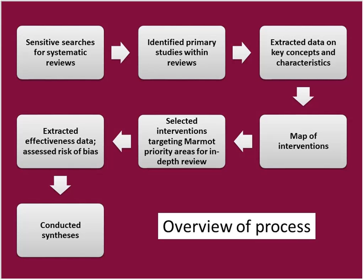The process we undertook was a standard systematic review. We undertook sensitive searches, looking for systematic reviews but also trials specifically around community engagement. We identified primary studies within reviews or trials of community engagement, extracted data from these studies on key concepts and characteristics, and used that to create a broad map of interventions to understand where community engagement had been used — with what populations, interventions, and outcomes. We then selected particular interventions targeting the six priority areas for our in-depth meta-analysis, extracted effectiveness and outcomes data, assessed risk of bias, and conducted syntheses.